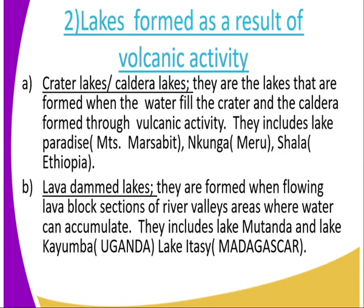Number two: lakes formed as a result of volcanic activity. We have crater lakes and caldera lakes — formed when water fills the crater or caldera created through volcanic activity. An example is Lake Paradise at Mount Marsabit. We also have lava-dammed lakes, formed when flowing lava blocks sections of a river, creating areas where water can accumulate. Examples include Lake Mutanda and Lake Itasy.